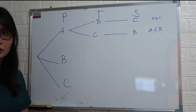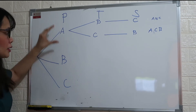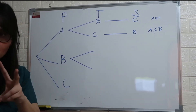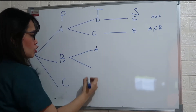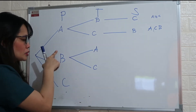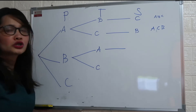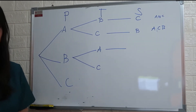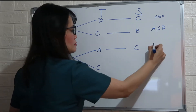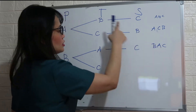Next, if member B is the president, for the treasurer there are two options — member A or member C. If the president is member B and the treasurer is member A, then who is the secretary? C. So the third outcome is B, A, C — B is president, A is treasurer, and C is secretary.